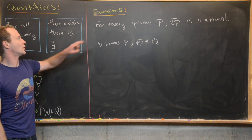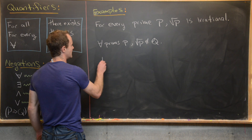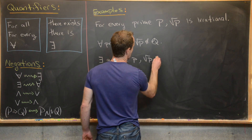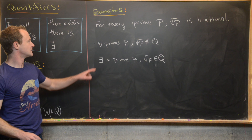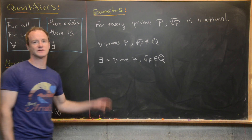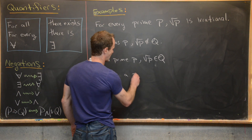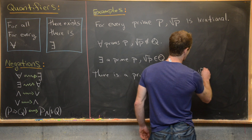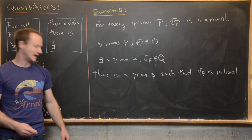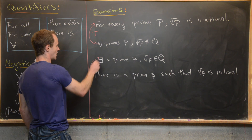Now let's go ahead and negate this — we're negating a true statement, so that should give us a false statement. We would have: there exists a prime p such that the square root of p is a rational number. That's the negation of the statement. Notice the for all turned into there exists, and we negated 'not being in the rationals' as 'being in the rationals.' Turning this back into an English sentence: there is a prime p such that the square root of p is rational.